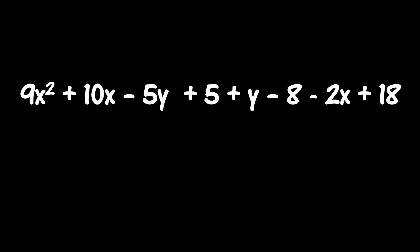Hopefully you have tried to simplify this expression. Before the answer is revealed, let's figure out how many terms the simplified expression will have. The expression has 3 variables: x squared, x, and y, and it also has constants. So the simplified expression will have 4 terms.